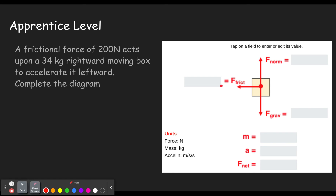Let's start by filling out what we've got. A frictional force of 200 newtons — so the frictional force is 200 newtons. As a side note, you have to use the keyboard entry on screen. If you have a touch screen, it's a lot easier to use the touch screen and just touch the numbers; otherwise, you have to move your mouse around and click on them. The object is 34 kilograms, and kilograms is a unit of mass, so 34 would go in the mass field.